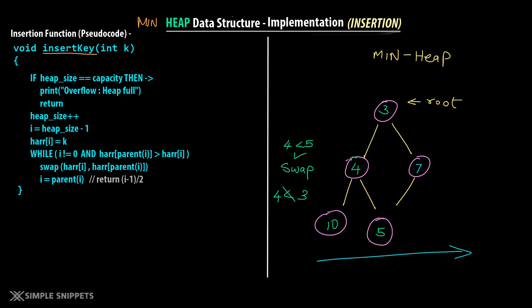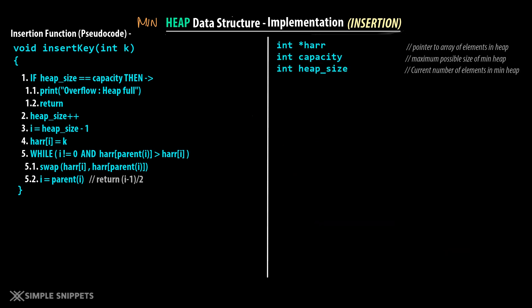Let's dry run this pseudocode step by step and see how insertion works on the implementation side. Keep in mind we have three data members: int harray, a pointer to the array; int capacity, which is the capacity of the heap array taken from the user; and heap size, which keeps track of the current number of elements in the heap.